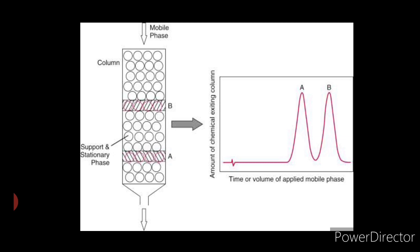The various components in the sample get separated essentially due to the differences in their partition or distribution behavior between the stationary phase and the mobile phase. The chromatographic method of separation in general involves four important steps: first, adsorption or retention of a substance on the stationary phase; second, separation of the adsorbed substances by mobile phase; third, recovery of the separated substances by continuous flow of mobile phase, which is also called elution; and fourth, qualitative and quantitative analysis of the eluted substances.